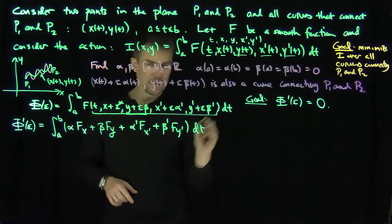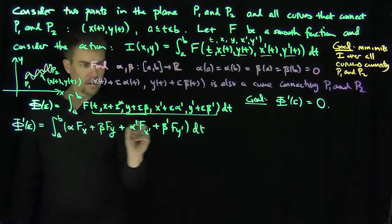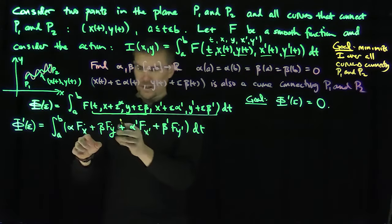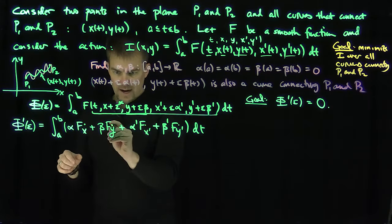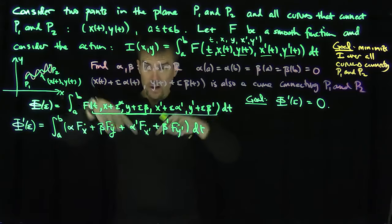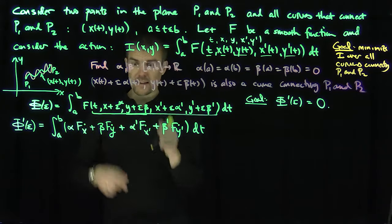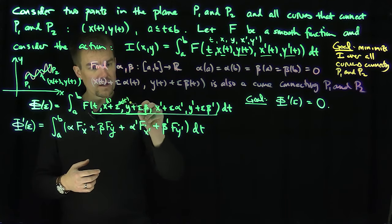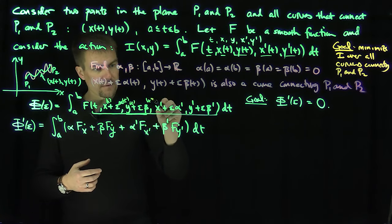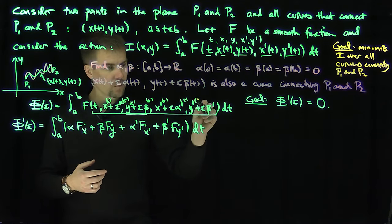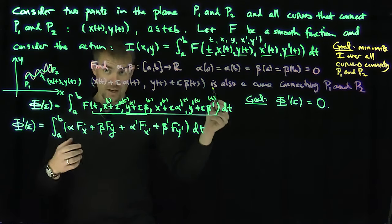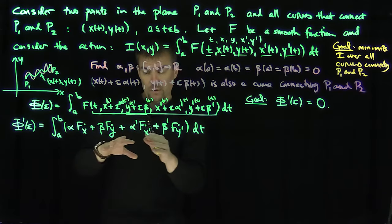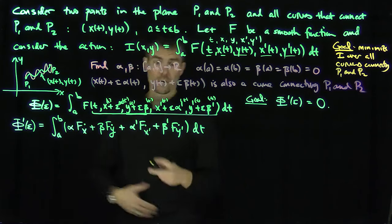I've suppressed the function-of-t notation to avoid writing out this whole expression repeatedly. Wherever you see a dot in the arguments, that corresponds to plugging in that full expression. All of x, alpha, y, beta, x', alpha', y', beta' are functions of t — I'm just suppressing them in this notation to convey the general idea of how the Euler-Lagrange equations are formulated.